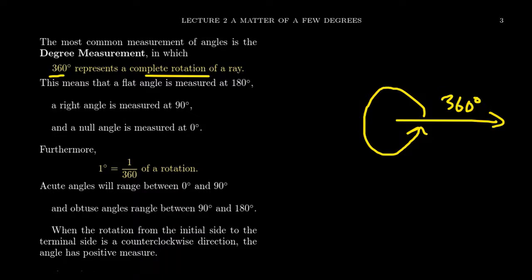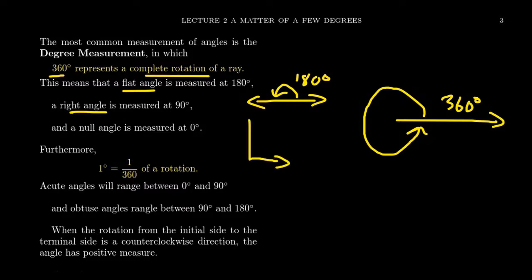So if you take a ray and rotate around in a whole circle so that the initial side and the terminal side are exactly the same, this represents a 360-degree measure. Since there are 360 degrees in a full rotation, a half rotation — which is just a half plane — would be half of 360, giving us 180 degrees. A right angle, which is half of a flat angle, would then be 90 degrees — a statement many of us are probably familiar with.